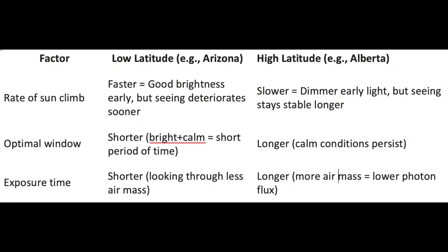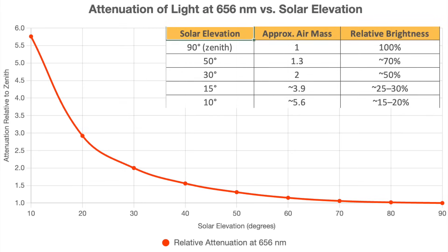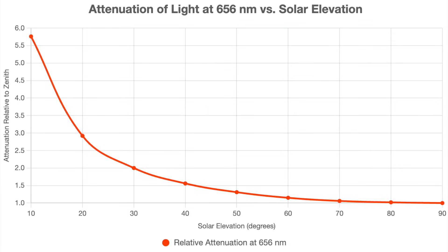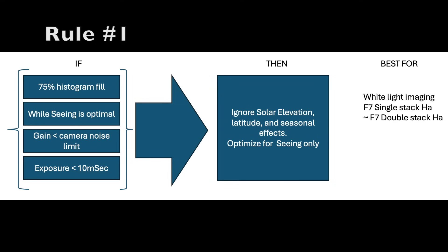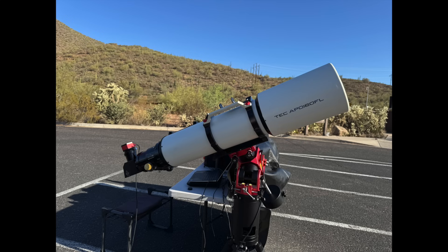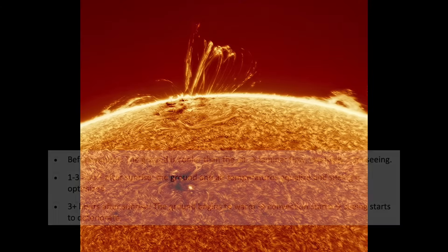Optimizing solar imaging is a balancing act between solar geometry and atmospheric physics. By understanding how latitude affects solar elevation and how ground and air temperature balance control seeing, you can plan imaging sessions that yield sharper, higher-contrast images with fewer surprises. Rule number one: if you can get a 75% histogram fill with a 10-millisecond or less exposure without pushing camera gain too high while seeing is optimal, disregard solar elevation and latitude concerns. This is most likely if you're imaging in white light or at F7 in hydrogen alpha with a single stack — image when seeing is best, one to three hours after sunrise.